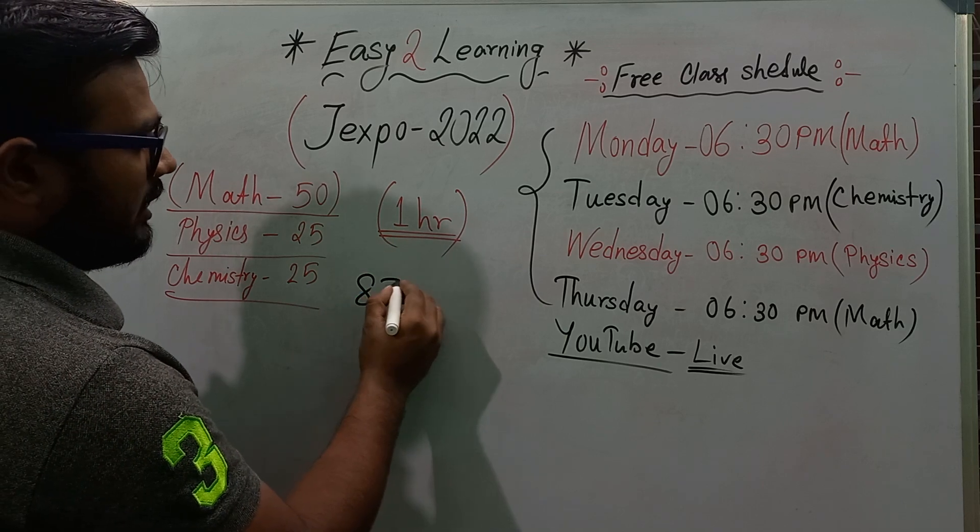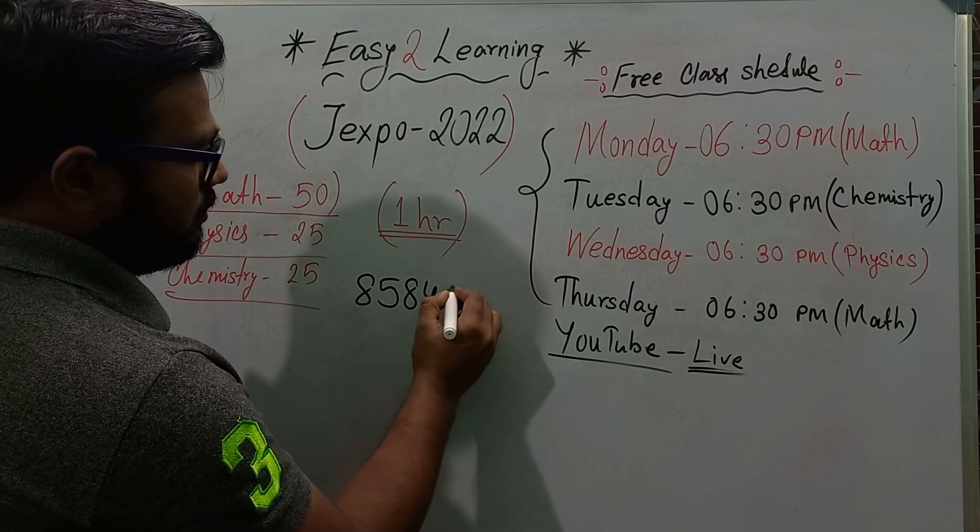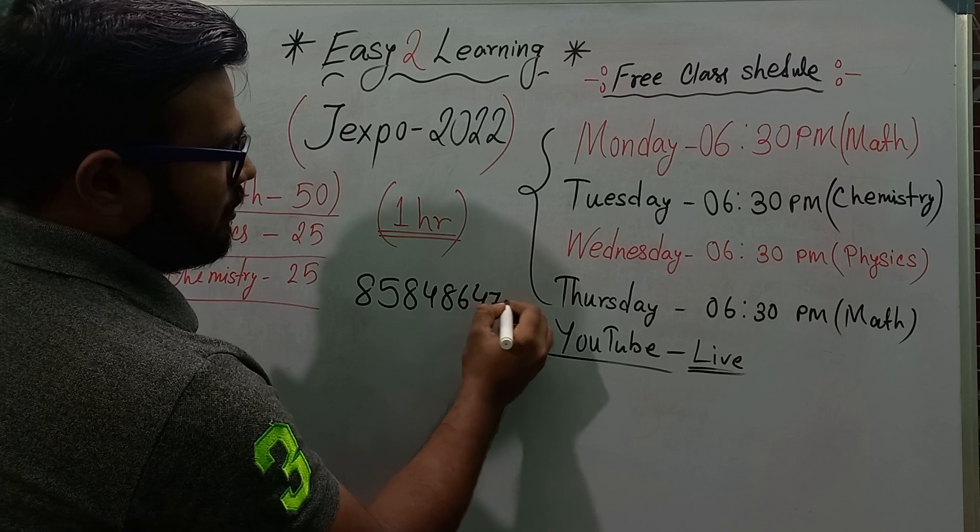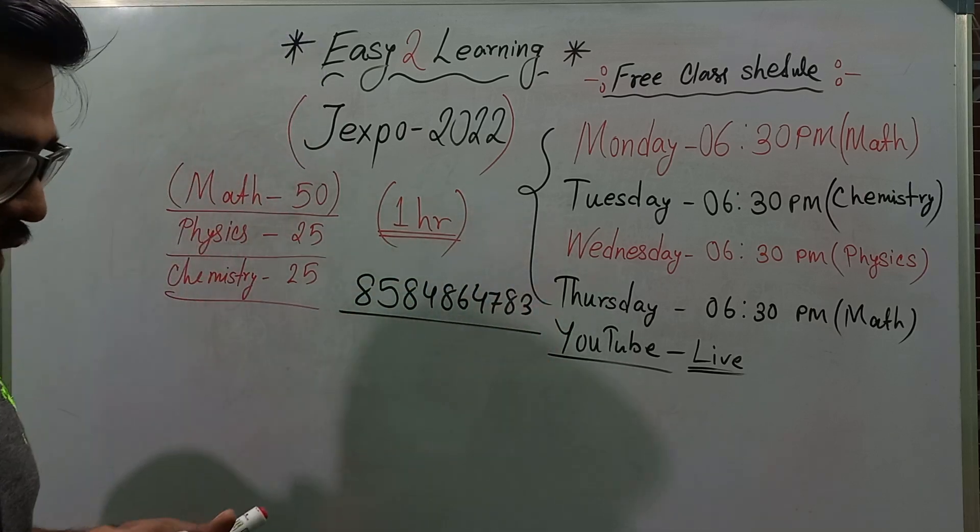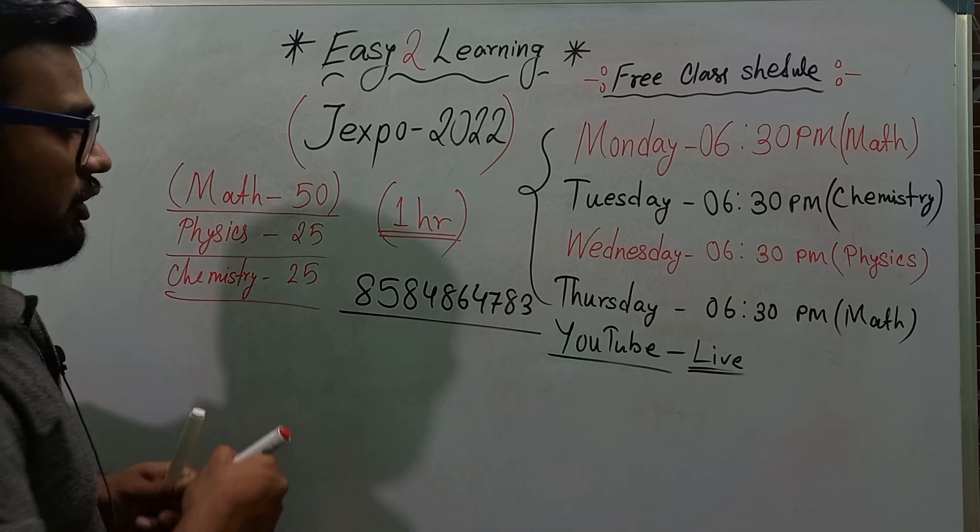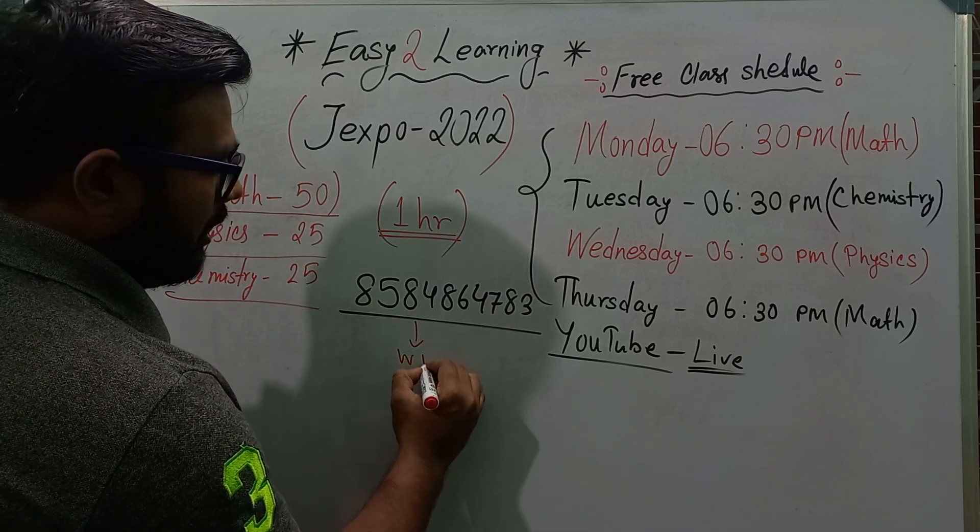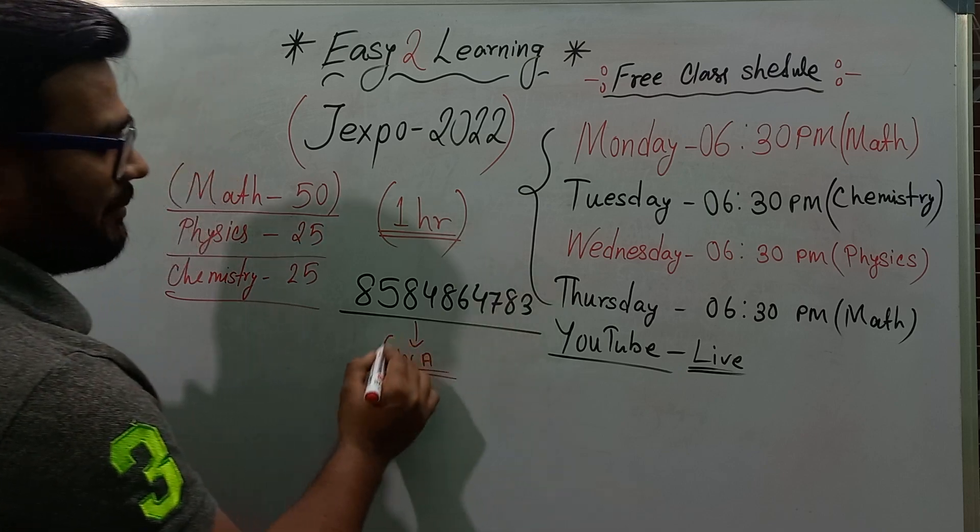So you will call us: 85, 84, 86, 47, 83. I don't have to receive all the calls because I have a problem, so I think better for you, you will have a WhatsApp group.